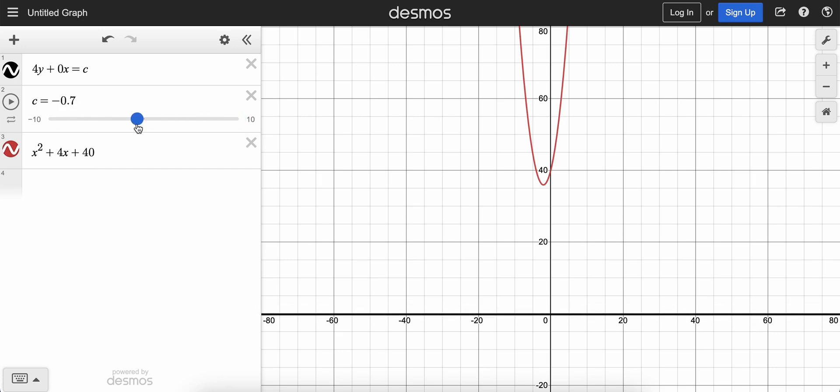Now remember, the question asked us to find one intersection point. So you could probably already tell that we want to get this black line to go higher and higher and higher until it intersects this parabola right here at its vertex at this value here, 36. So how are we going to do that?